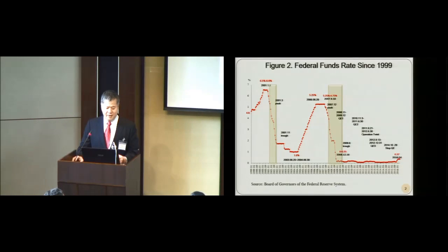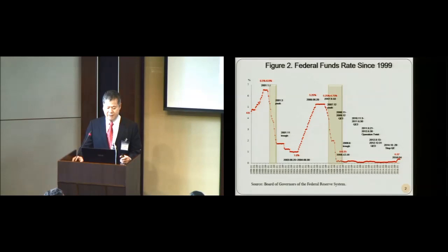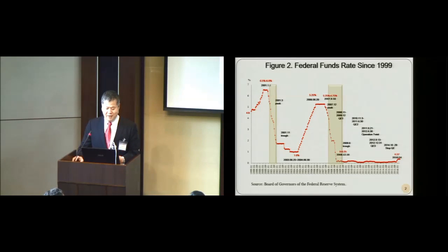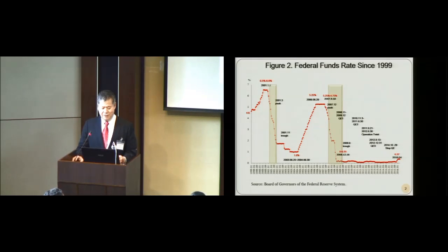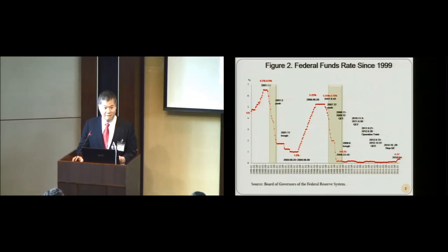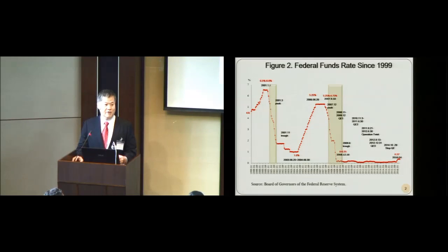In the financial turmoil period, a very similar situation happened. Before the peak of 2007, the Fed lowered the interest rate from 5.25% to 4.75%, also 2–3 months before the peak. And after that, drastically reduced the federal funds rate. On December 16th, 2008, the federal funds rate was as low as 0% to 0.25% and maintained at that low level for about seven years. And on December 16th, 2015, the Fed started to increase the interest rate.